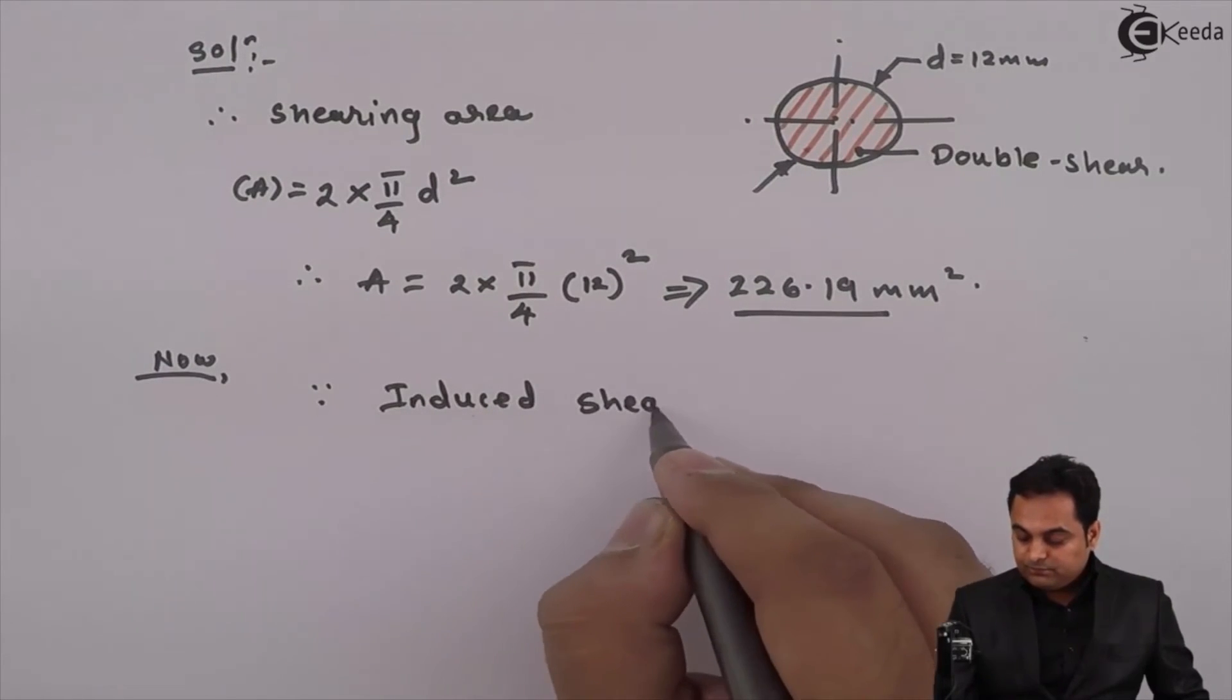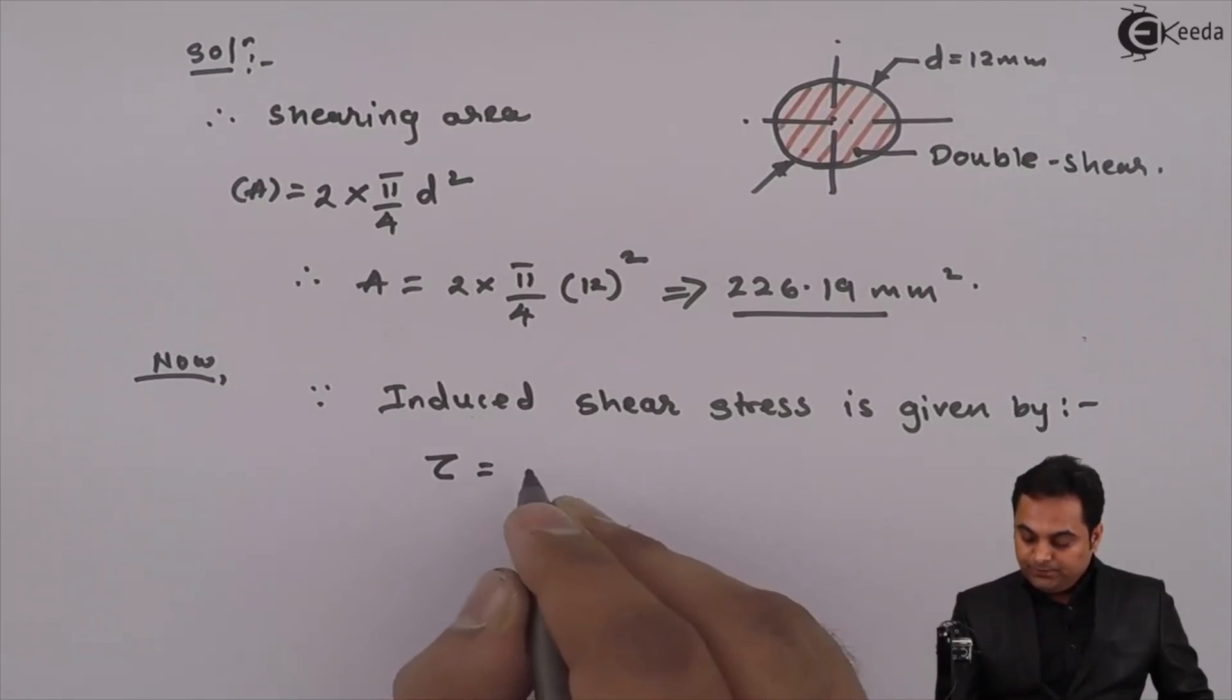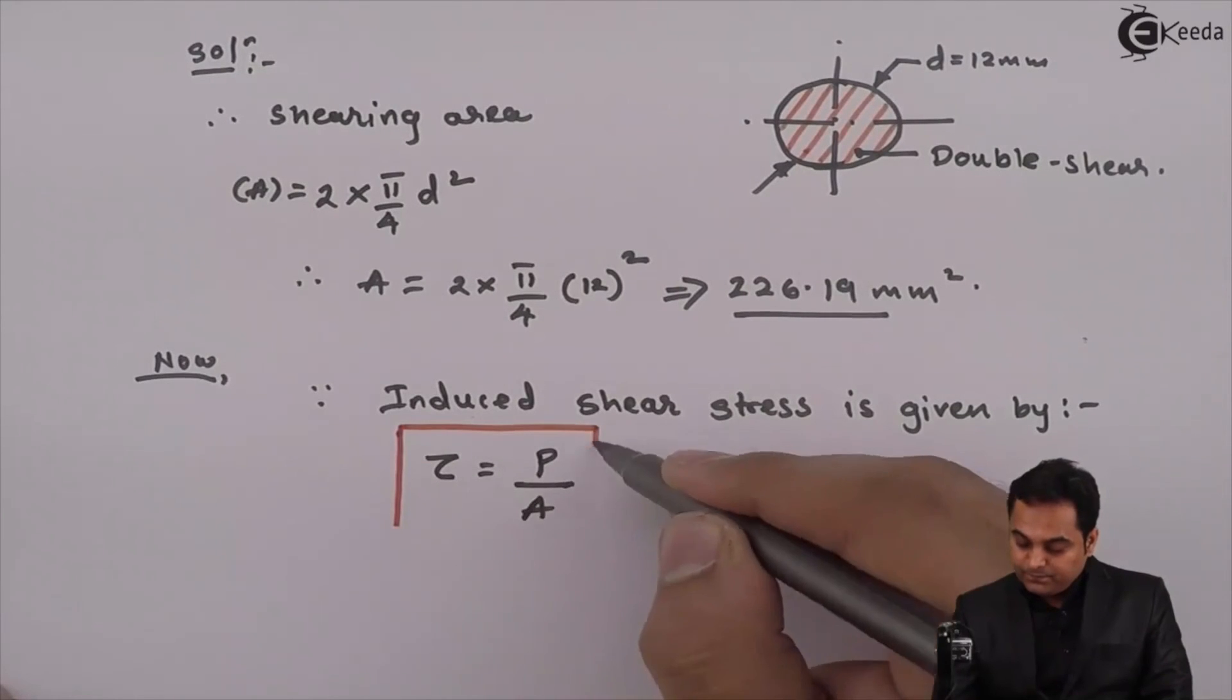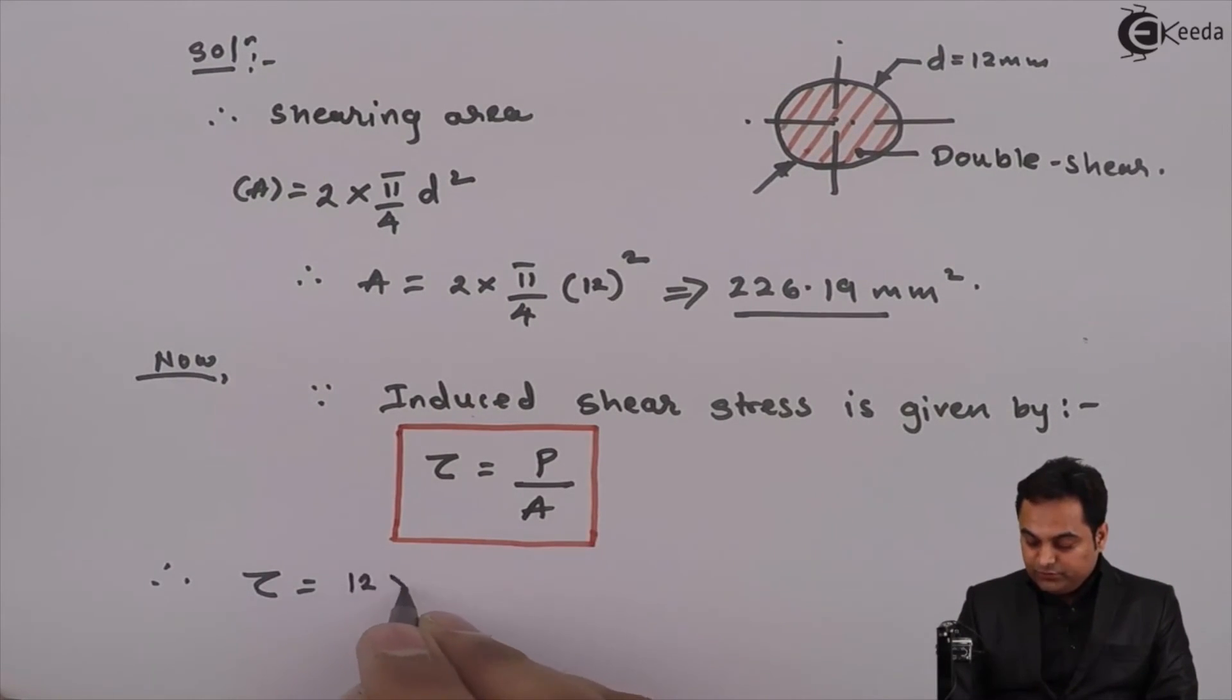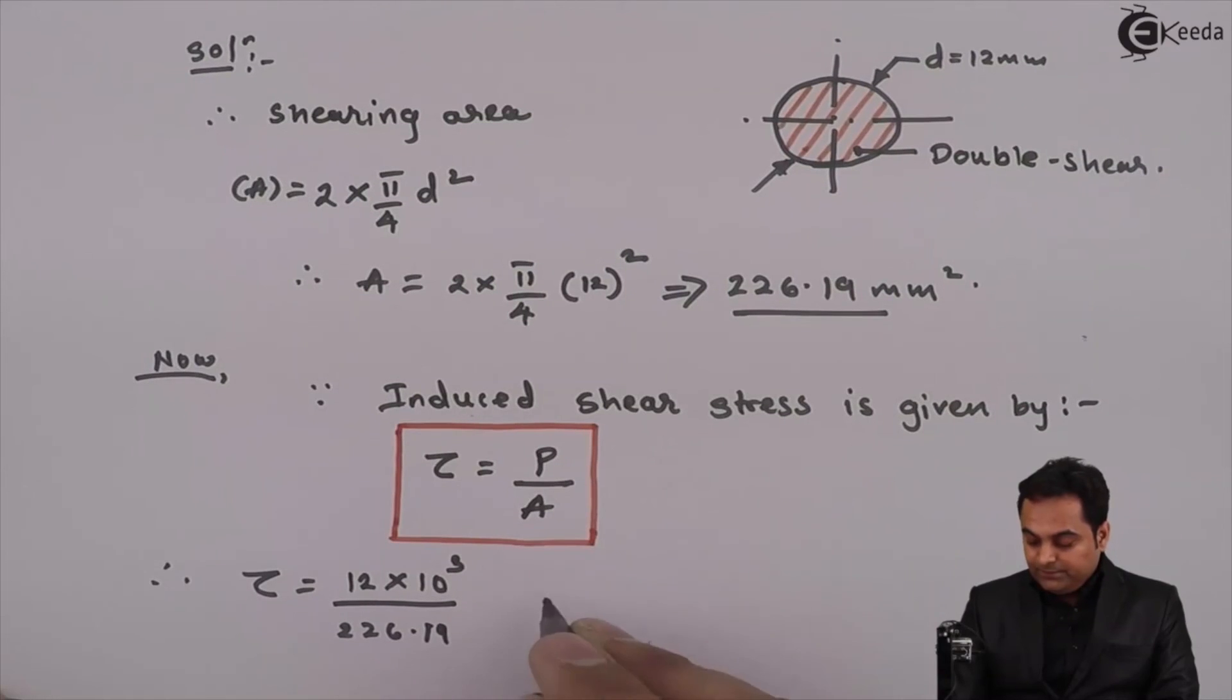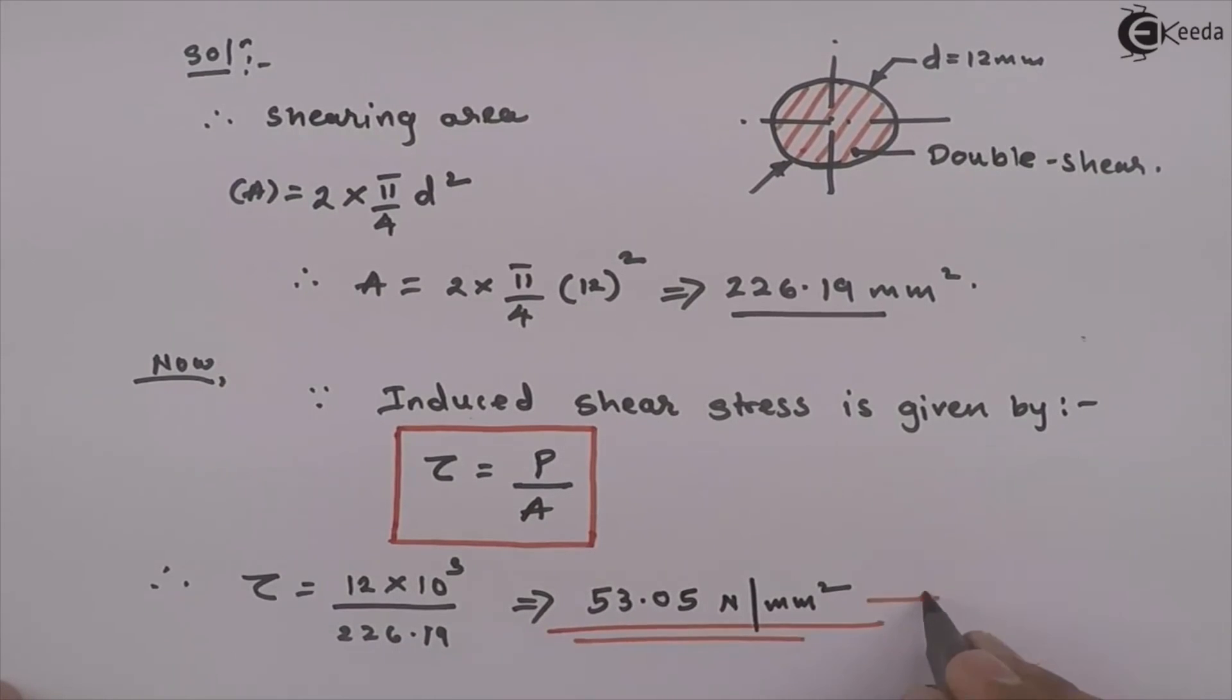Since induced shear stress is given by tau equals force upon area. Therefore, tau is equal to force is given as 12 kilo Newton, so 12 into 10 raise to 3 upon area is 226.19. So I am getting the value of shear stress as 53.05 Newton per mm square. So this is the answer.